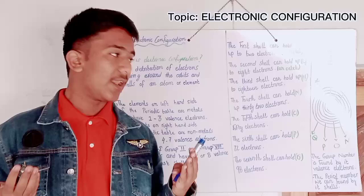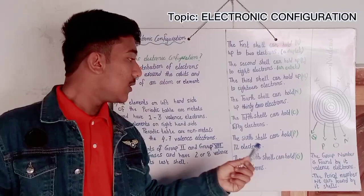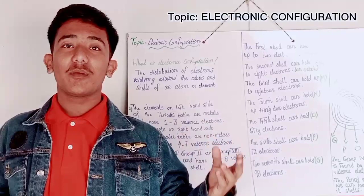We can also find the group number and the period number by seeing the electronic configuration. The group number is found by its valence electrons. The period number is found by its shells.